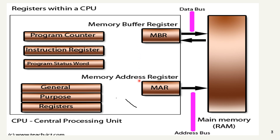There are two more registers: MBR and MAR. MBR, the memory buffer register, acts as a buffer between the CPU and memory, allowing data to be transferred at a more efficient rate. The memory address register (MAR) — when the CPU needs to read or write data in memory, it places the memory address of the data into MAR. The MAR then sends the memory address to the memory unit, which retrieves the data from the specified memory location and returns it to the CPU.